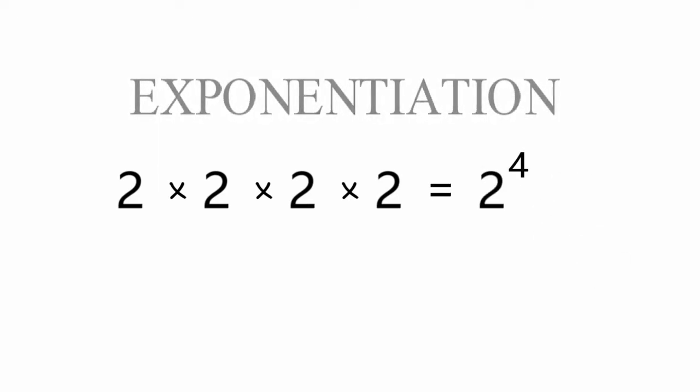And then we have exponentiation. 2 times 2 times 2 times 2. We can bundle this as 2 to the power of 4. You multiply 2 to itself 4 times.